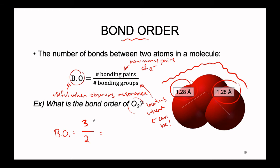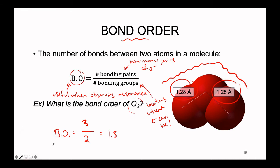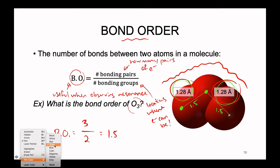This means the bond order on average across the molecule is three-halves, or 1.5. Between the central oxygen and each outer oxygen, we have a 1.5 order bond. So we don't have a double and a single, but rather somewhere in between on both sides on average. This explains why the bonding distance is exactly the same, as well as the bonding energy being exactly the same as found experimentally.